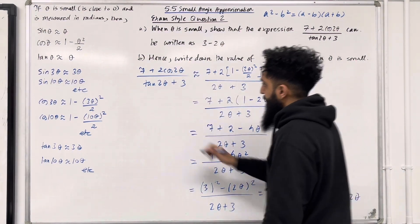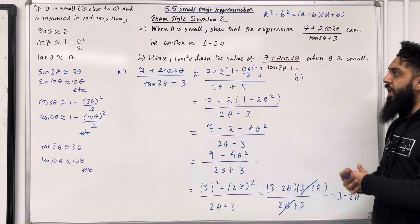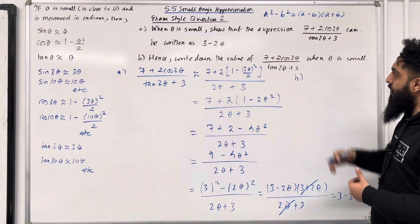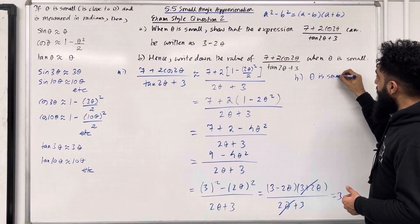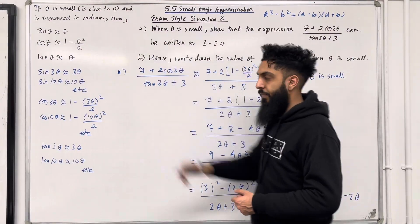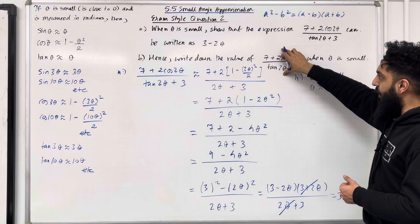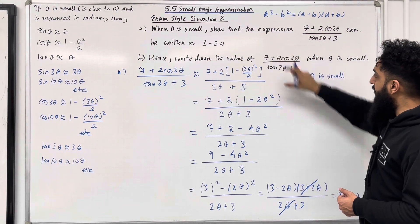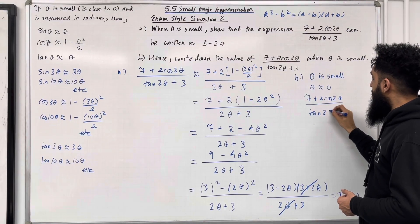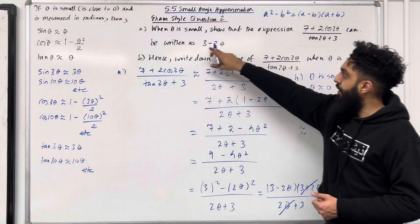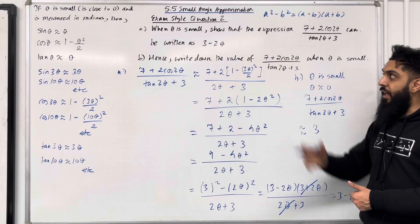For part B, we use our answer from part A. We need the value of (7 + 2cos 2θ)/(tan 2θ + 3) when theta is small. Since theta is small, theta is approximately 0. Using the expression 3 minus 2θ with θ ≈ 0, the value is 3 minus 2(0), which equals 3. That completes part B and exam style question 2.